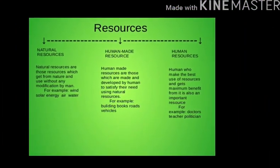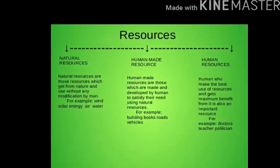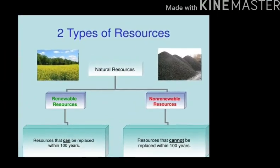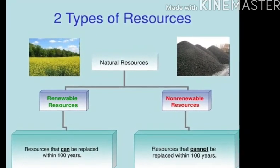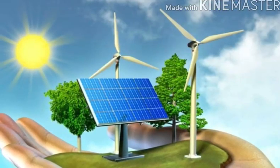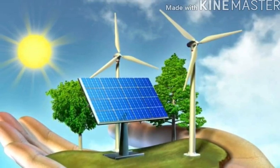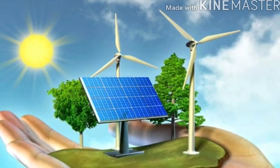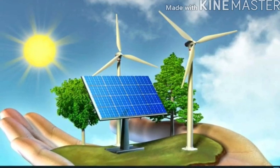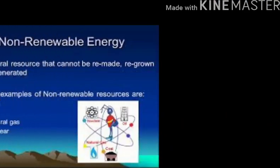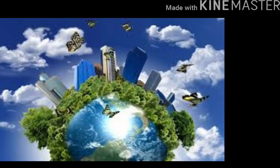Resources are of three types: natural, human, and capital resources. Natural resources are of two types: renewable and non-renewable. Renewable natural resources are those that can be used repeatedly and do not run out — for example, solar energy and wind energy. Non-renewable resources are limited in supply and cannot be used sustainably — for example, oil, natural gas, coal, and others.